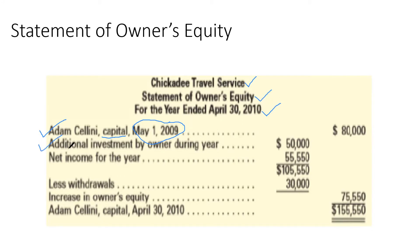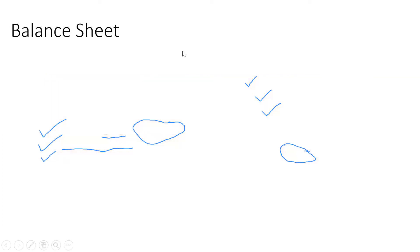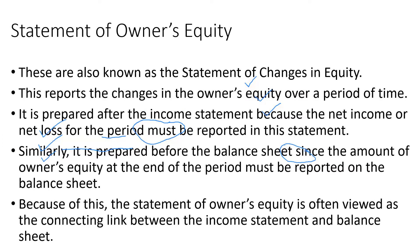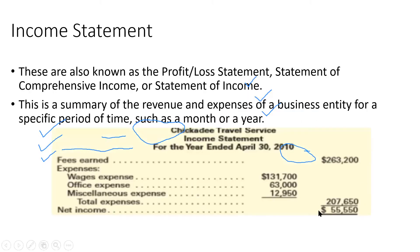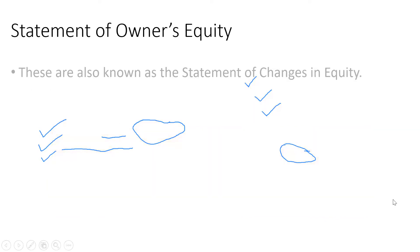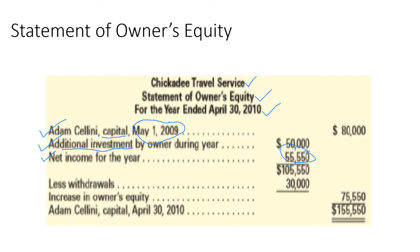This area — additional investment by the owner during the year — shows that from May 1, 2009 to May 1, 2010, the business owner placed an additional investment of $50,000. Then net income is $55,550. Where did this value come from? From the income statement — this is the profit computed there.